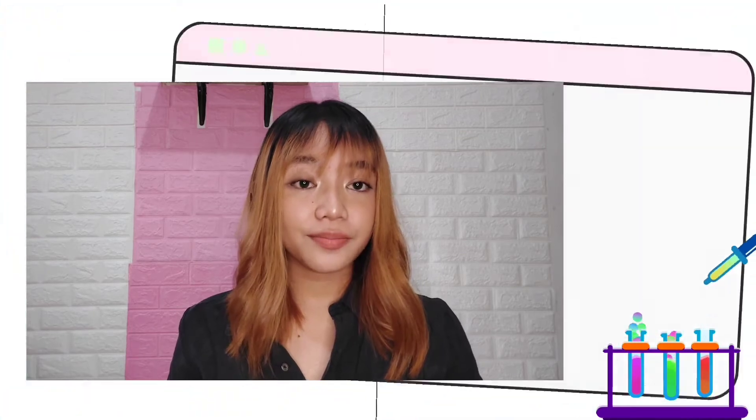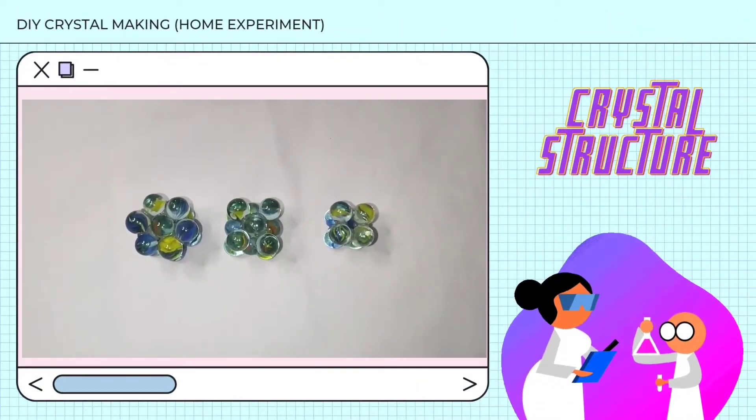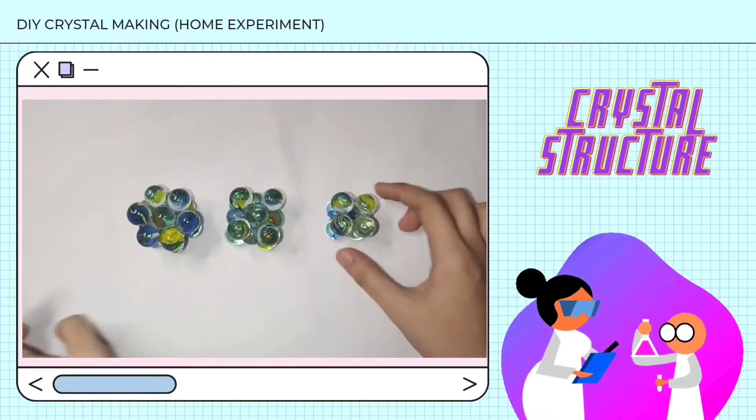And for the crystal structure, here are the models of crystal structure: the HCP, the FCC, and the BCC.